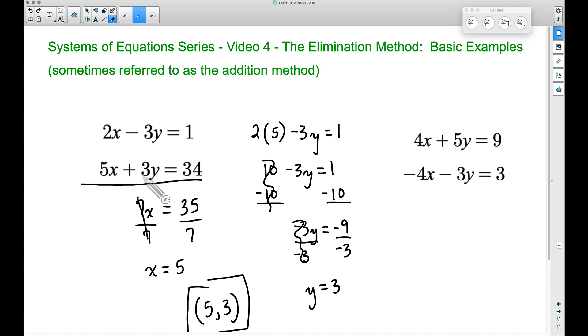Now let's make sure this works for the second equation. 5 times x—remember x was 5—5 times 5 is 25, plus 9, which is 3 times 3 times 3. 25 plus 9 does give us 34. Therefore, this is the solution to our system of equations.